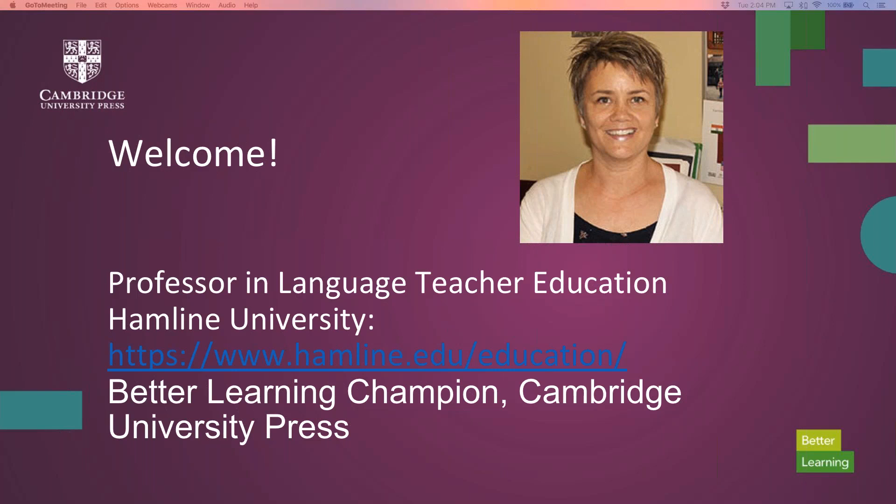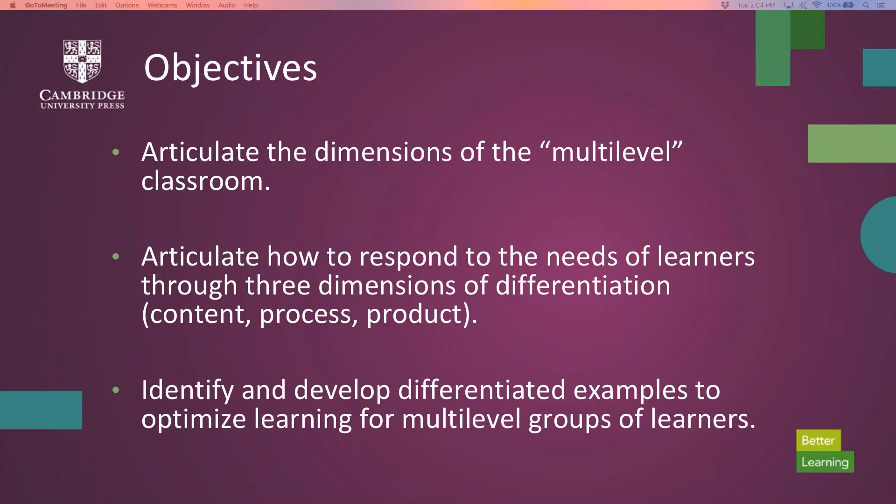I'd love to know who's here in the audience. If we could just take a quick poll. But before that, let's look quickly at our objectives. We're going to articulate the dimensions of multi-level classes — what does that actually mean? Articulate how to respond to the needs of learners in these diverse settings through three dimensions of differentiation. And then finally, identify and develop differentiated examples to optimize learning for multi-level groups of learners.